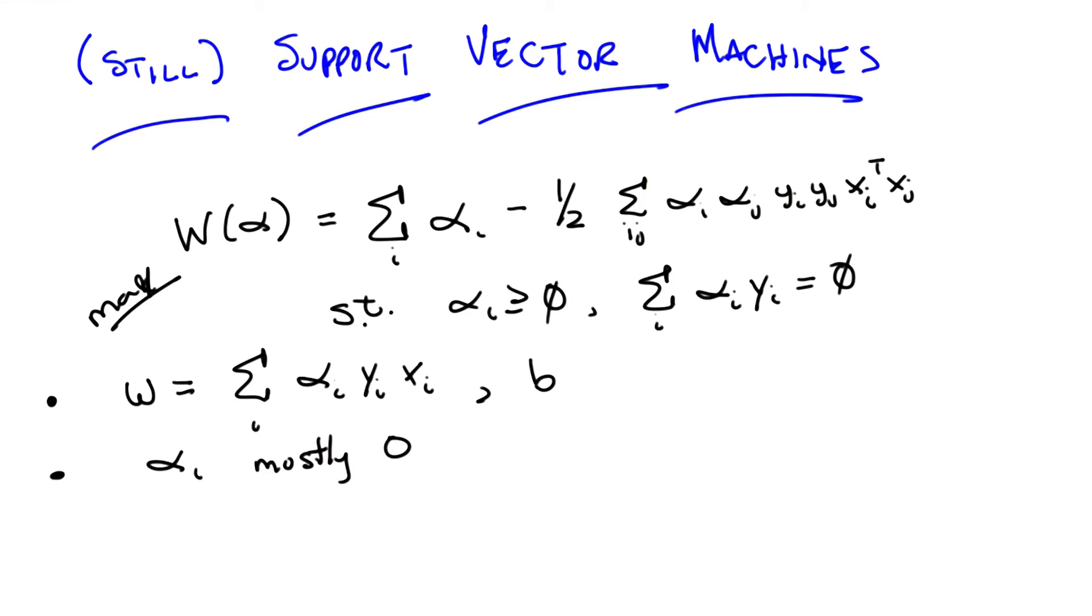So w is the sum of the data points times their labels times alpha. And if the alpha is zero, the corresponding data point isn't really going to come into play in the definition of w at all. So a bunch of the data just don't really factor in to w. That's exactly right. So basically, some of the vectors matter for finding the solution to this, and some do not.